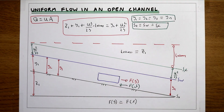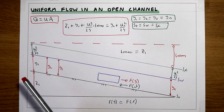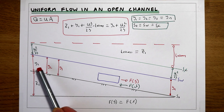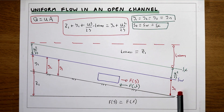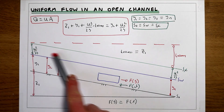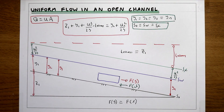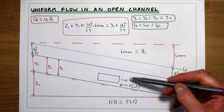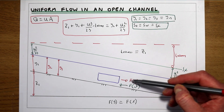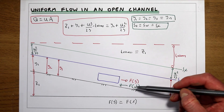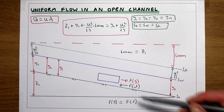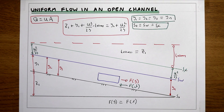So to summarise: uniform flow means the flow depth is the same all the way throughout the length of channel we're considering. If the system is steady, that means the velocity is also going to be the same all the way through. This arises because the gravitational forces driving the flow are in balance with the frictional forces at the bed of the channel acting in the opposite direction.